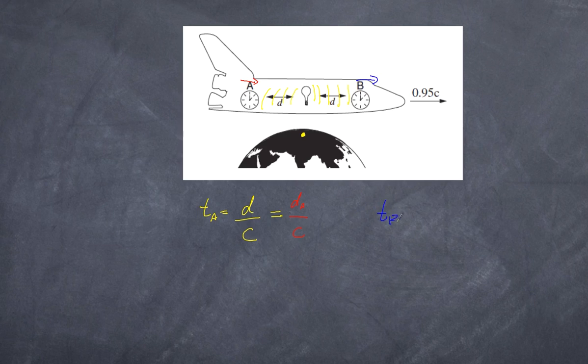Now for B, that's the same, but the thing is B is receding away. So therefore the time for B is equal to the distance it travels to get to B divided by c. But here's the problem: the distance for A is going to be smaller than the distance for B,